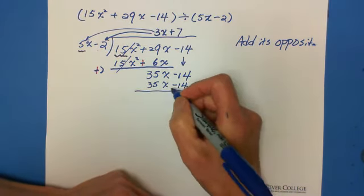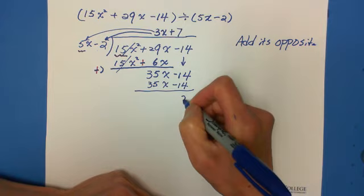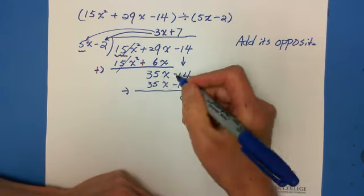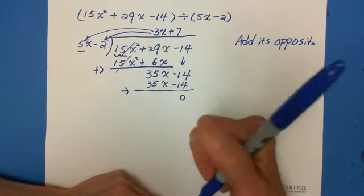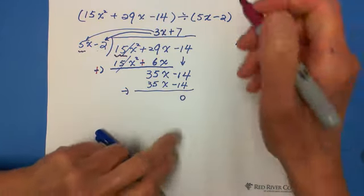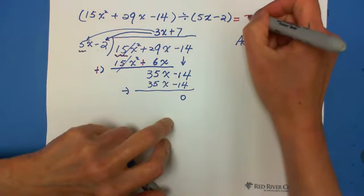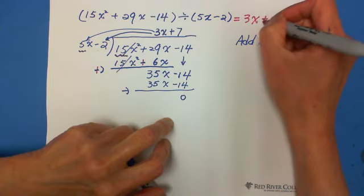As you can see, it's divisible. Subtract. Got 0. So the answer is 3x + 7.